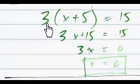We've got to move that 15 over, so we now have 3x equals 0, which means x equals 0.